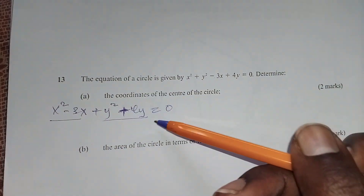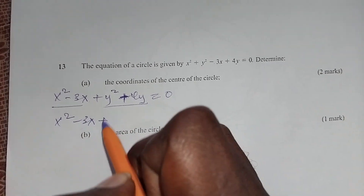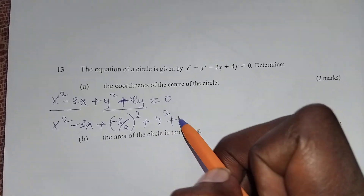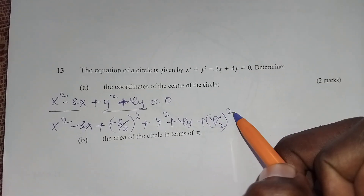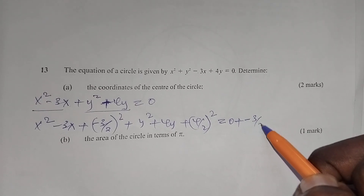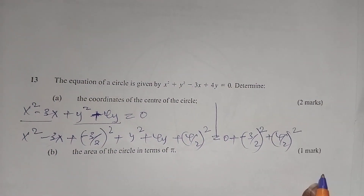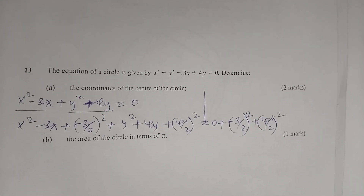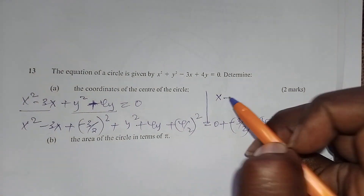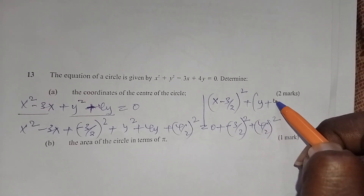If the constant term was there, we take it to the other side. So completing the square, we have x squared minus 3x plus (negative 3 over 2) squared plus y squared plus 4y plus (4 over 2) squared equals 0 plus (negative 3 over 2) squared. This factorizes to (x minus 3 over 2) squared plus (y plus 4 over 2) squared equals 0.